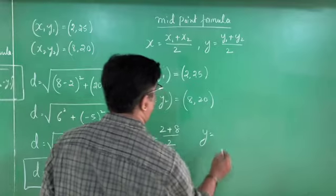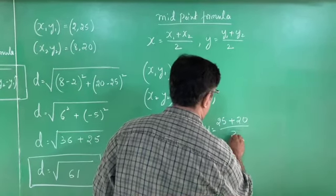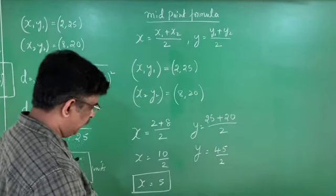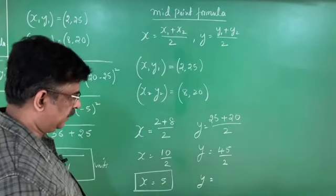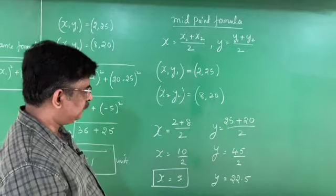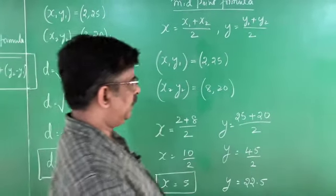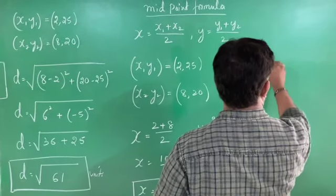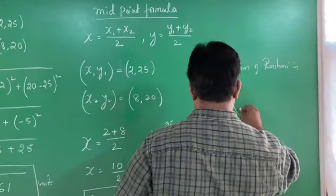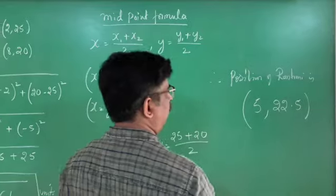For y: y equals (25 plus 20) divided by 2, which equals 45 by 2. In decimal that is 22.5. Therefore the x-coordinate is 5 and the y-coordinate is 22.5. The position of Rashmi is (5, 22.5). So Rashmi has to run on the fifth line and cover 22.5 meters to reach the exact midpoint, where she hoists the blue flag.